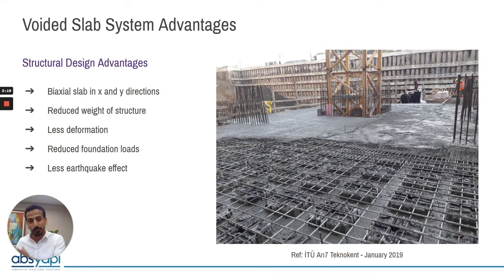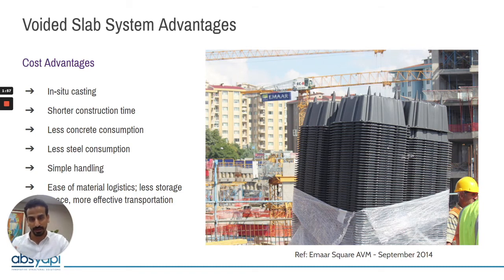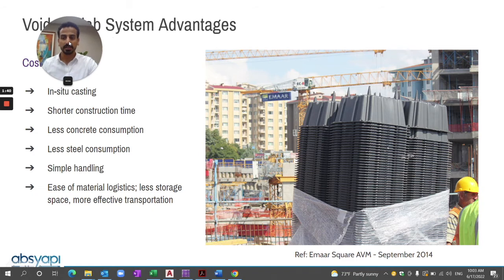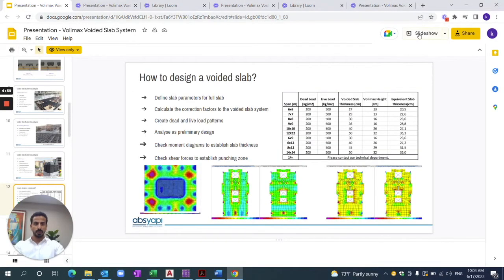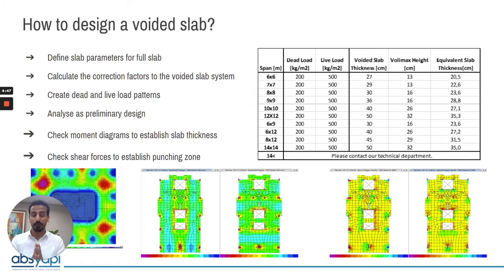The cost benefits include shorter cycle time compared to flat slab or waffle slab construction, less concrete consumption, less steel consumption due to the reduced self-weight, and easy material logistics to the job site. The main point of this video is to show structural engineers worldwide the benefits of Volimax and give them useful information about using it in their projects.